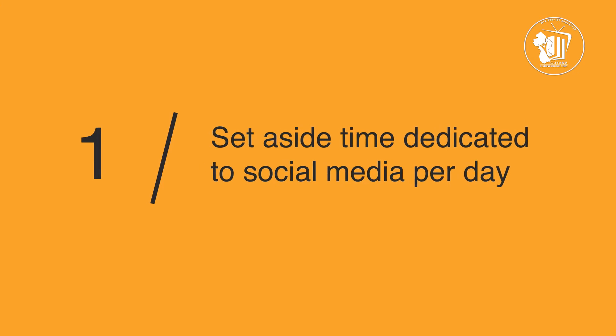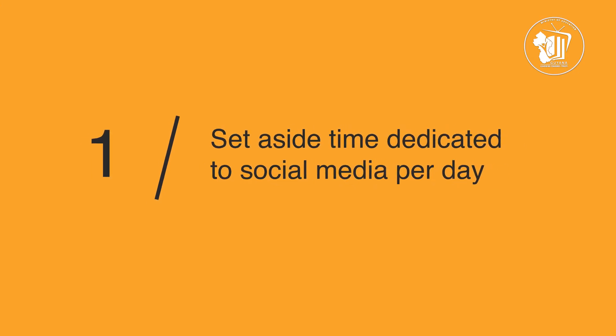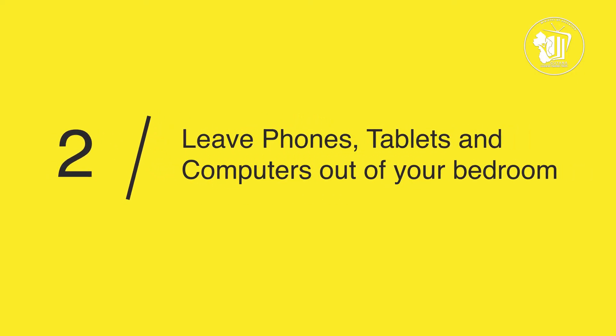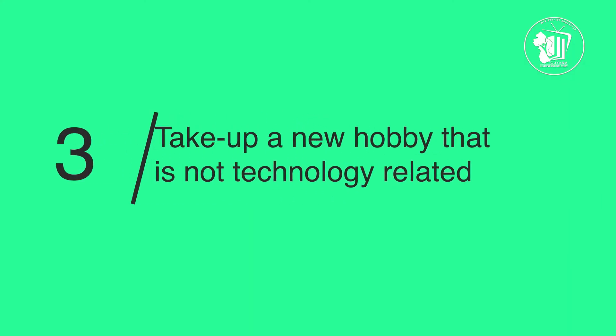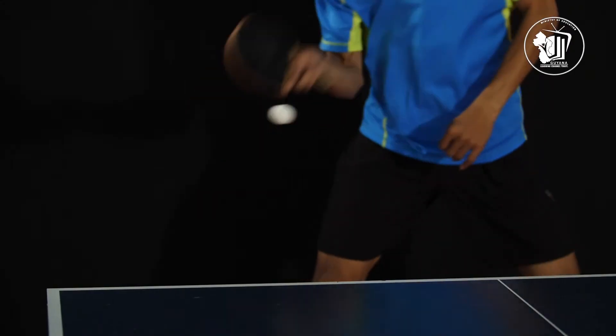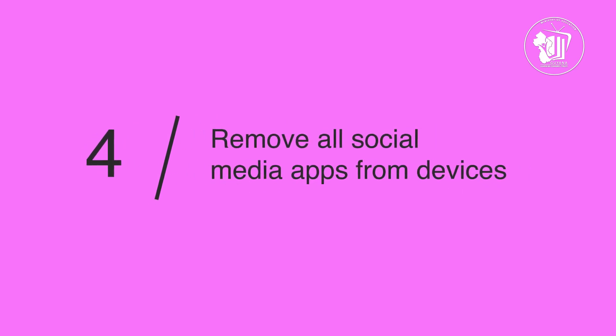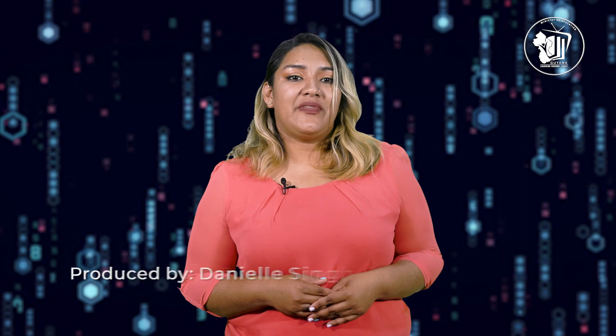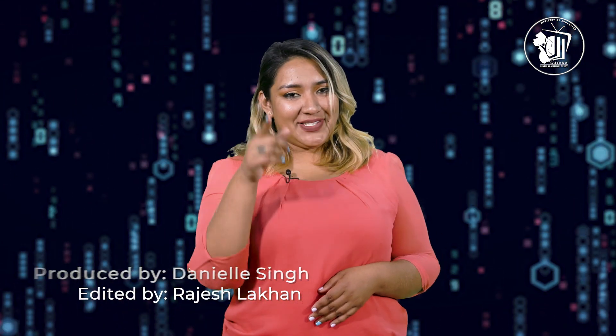Whether you have social media addiction or are just on your apps more than you need to be, the good news is there are ways you can help decrease your overall use. First, set aside a certain amount of time dedicated to social media per day and turn on a timer to help keep you accountable. Second, leave your phones, tablet, and computer out of your bedroom. Next, take up a new hobby that's not technology related — for example, sports, art, cooking, and more. Remove all social media apps from the devices you use most, such as your smartphone. By taking frequent breaks and setting clear boundaries for yourself, you can help prevent an over-reliance on social media before it becomes harmful. Let's be CyberSmart!